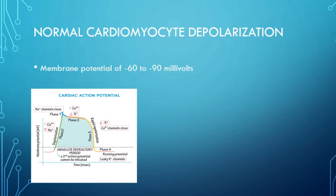In a normal healthy cell, repolarization begins at the same point that depolarization happens. This continues until the resting membrane potential hits negative 90 millivolts, then waits to start the whole cycle again. Now that we know the basics of cardiomyocyte action potential, let's get into what causes the ischemia effects on the 12-lead.